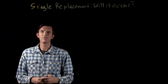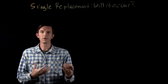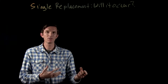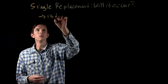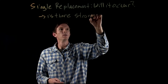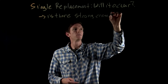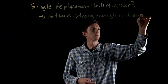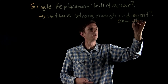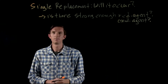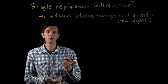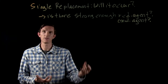In this video we're going to address the idea of identifying whether or not a single replacement reaction will happen. We have to answer the question: is there a strong enough reducing agent, or is there a strong enough oxidizing agent? We need to identify if what we're mixing together is something strong enough to cause oxidation or strong enough to cause reduction.